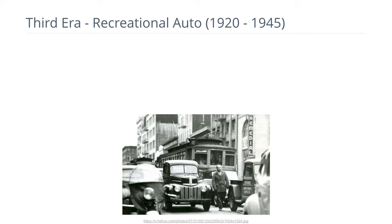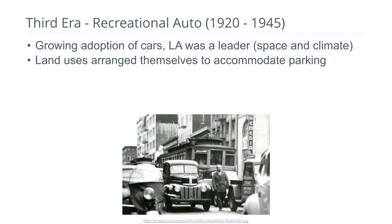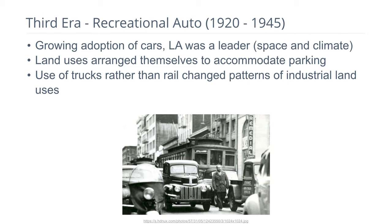The third era is called the recreational auto era. Before most people used vehicles for work commuting, vehicle ownership went up. Los Angeles was a leader because later development of the city meant there was space to accommodate cars in roads and off-site parking, and the climate was amenable to early vehicles with less reliability. In this era, land uses started arranging themselves to accommodate parking. The use of trucks for industrial uses also changed industrial location patterns — prior, industries had to locate next to a rail spur, but trucks allowed them to move to suburban locations.